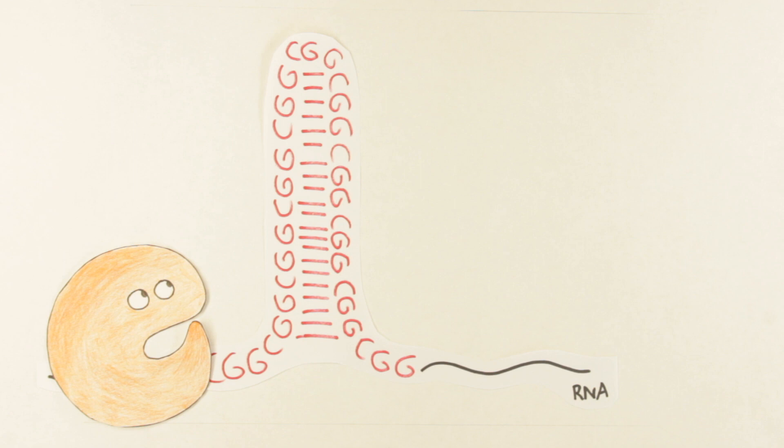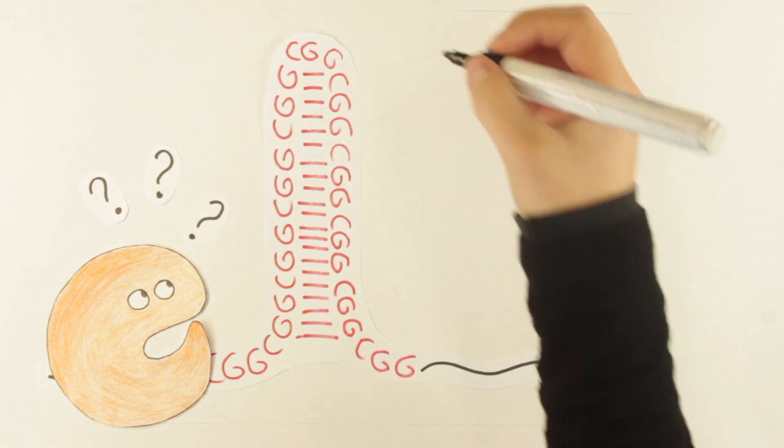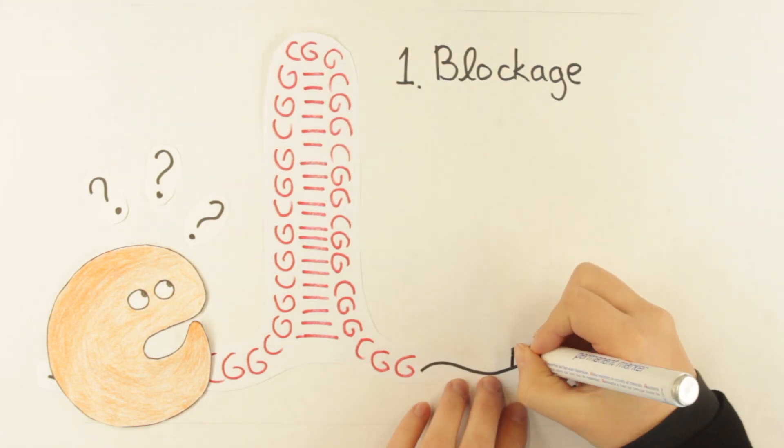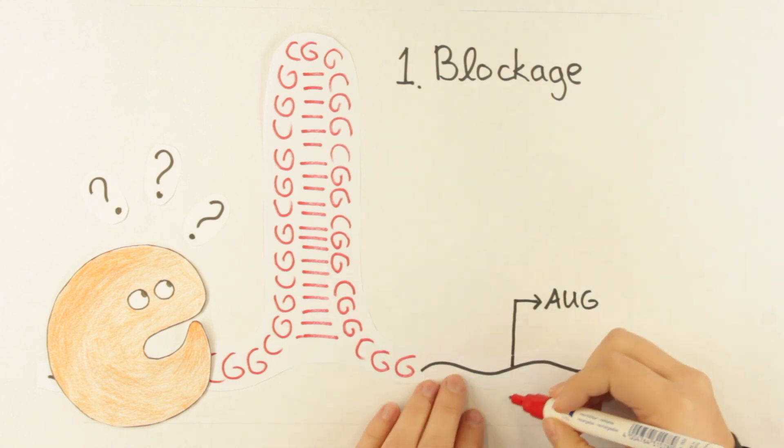When a ribosome scans the RNA and encounters this structure, three possible things can happen. First, the ribosome gets stalled by the hairpin and can't continue translation of the normal protein.